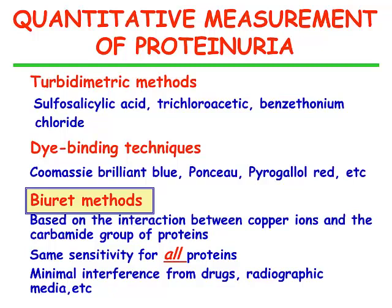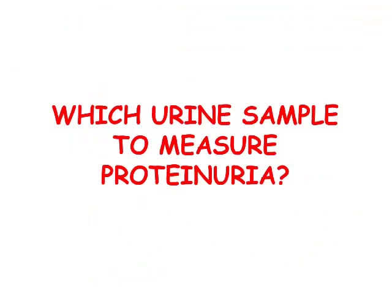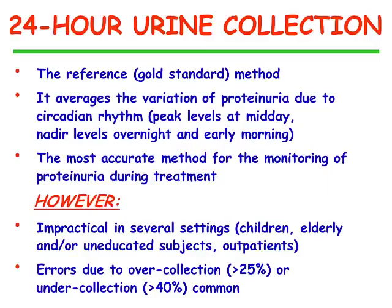Once we have identified the best method to quantitate and measure urine protein, which sample should we use to measure proteinuria? We have 24-hour urine collection, which still is the reference gold standard method because it averages the variation of proteinuria due to circadian rhythm, with peak levels at midday and low levels overnight and early morning. It is the most accurate method for monitoring proteinuria during treatment. However, it is impractical in several settings, such as children, elderly patients, uneducated subjects, and outpatients. Errors due to over-collection or under-collection are very common.